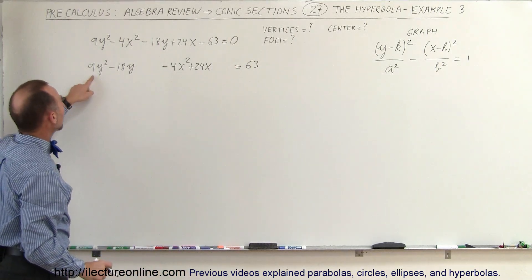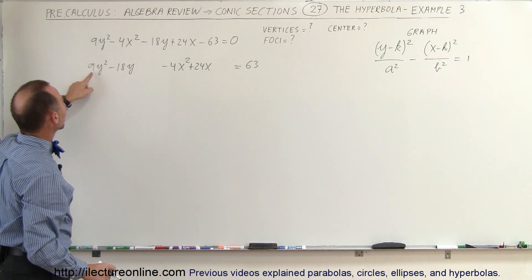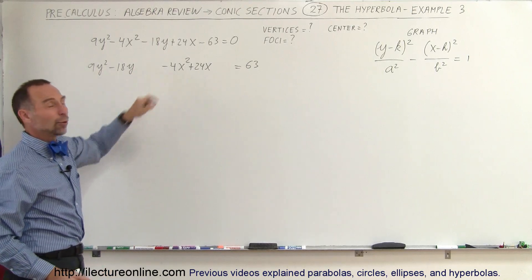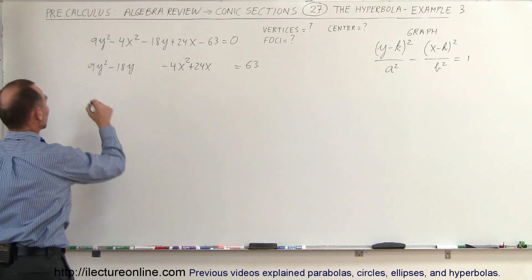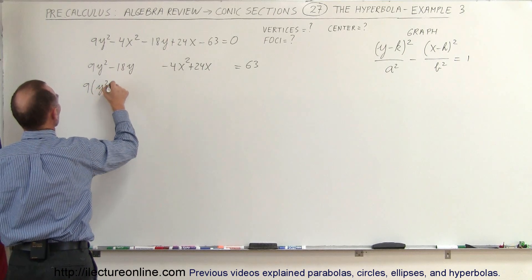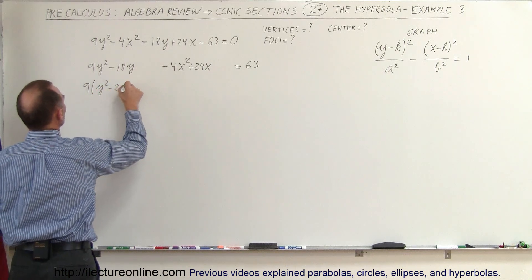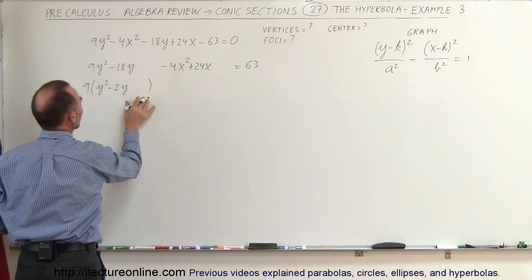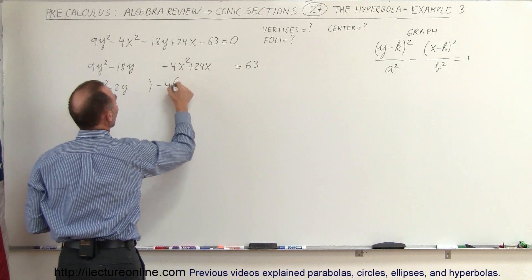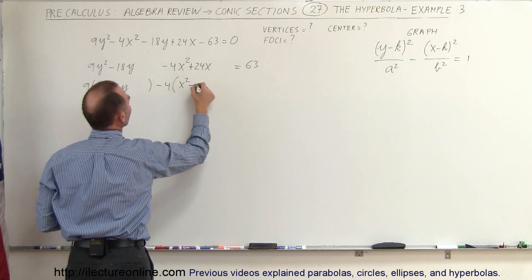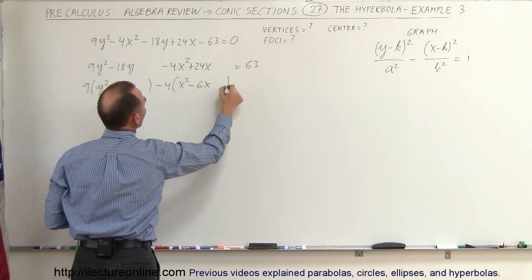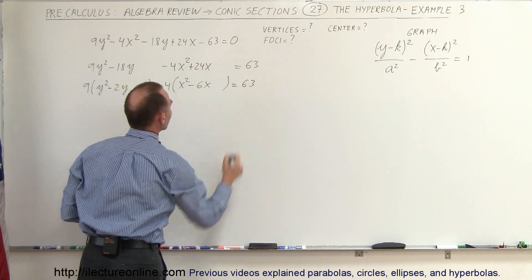The next step is to factor the 9 from the y terms and the negative 4 from the x terms, giving us: 9 times the quantity y squared minus 2y (leave some space), minus 4 times the quantity x squared minus 6x (leave some space), equals 63.